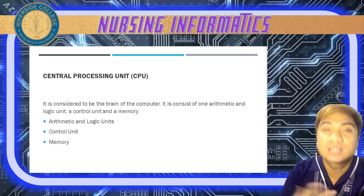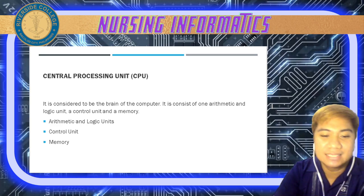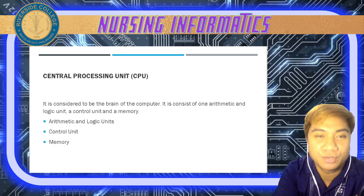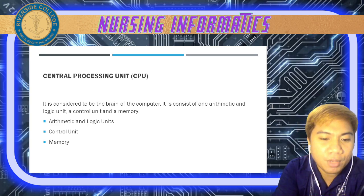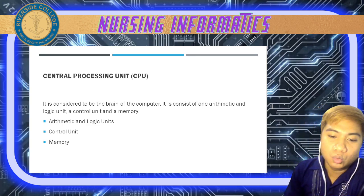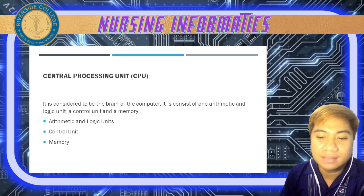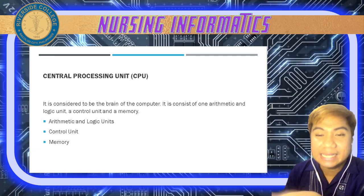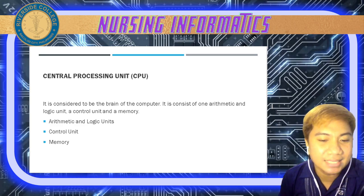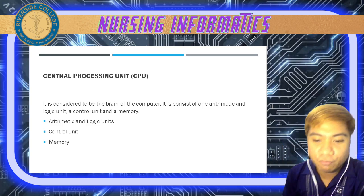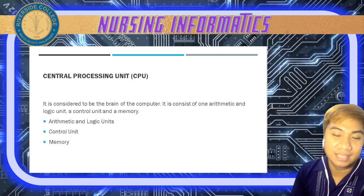Next, we also have the control unit. It carries out your computer functions such as fetch, execute, decode, and store. For example, when a user sets a command to add two numbers like 220 plus 310, the control unit fetches the instruction and decodes it for the proper operation which is addition, then the control unit executes by sending the instruction to the arithmetic unit to find the answer, and then the computer will store and display the answer on the screen.